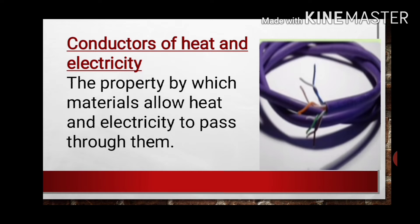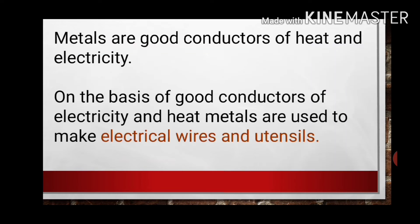The next physical property is conductors of heat and electricity — the property by which materials allow heat and electricity to pass through them. Since metals can be converted into the form of wires, they are good conductors of heat and electricity. This is why metals are used for making electrical wires. In your houses, the wires are made of copper or aluminum, both of which are metals. Utensils in your house are also made of metals as they are good conductors of heat.